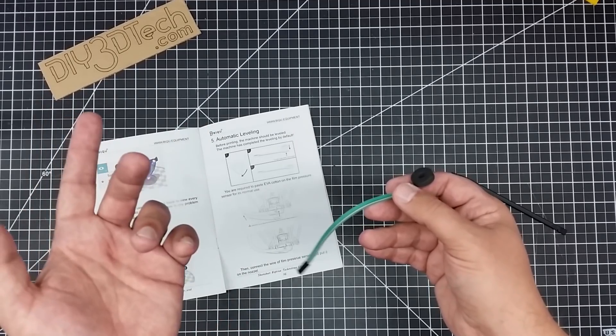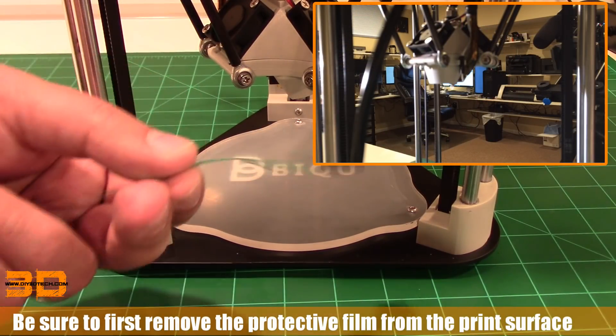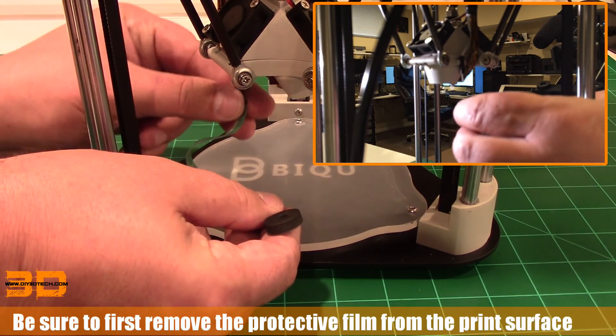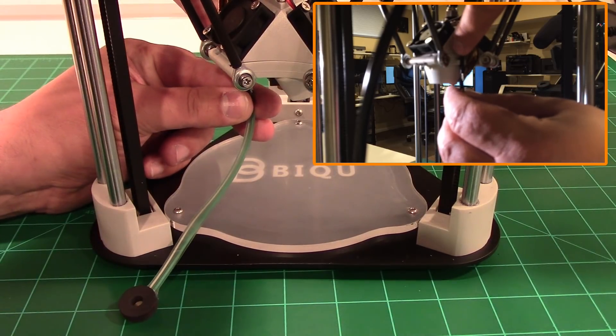So okay we're back here at the printer. We have the strain sensor. Now what we're going to do is plug this into the two pin and I'll get some overlay shots of this.